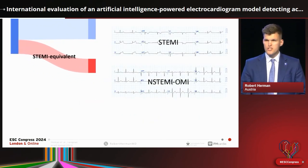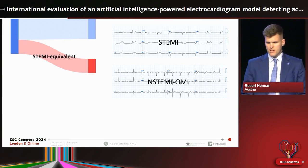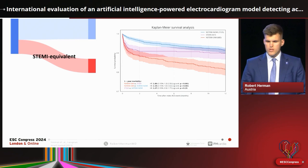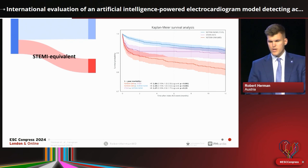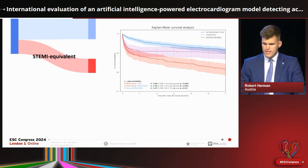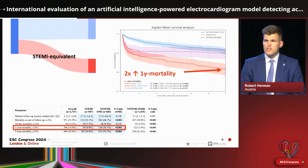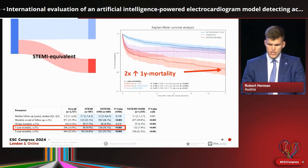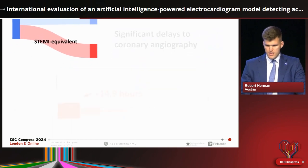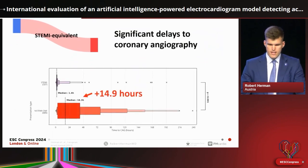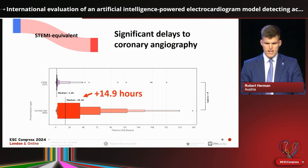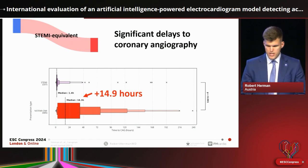Going back to those two patients: same underlying pathology of an occluded left circumflex, but a different ECG at presentation. The purple curve shows typical STEMI patients, and the red curve shows patients without typical ST elevation on the index ECG. Patients without typical ST elevation presenting with coronary occlusion actually have a two times higher all-cause one-year mortality — we believe due to delayed interpretation and significant delays to coronary angiography.